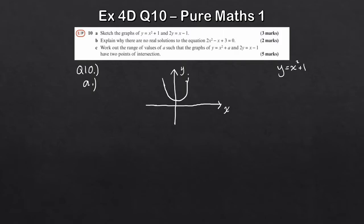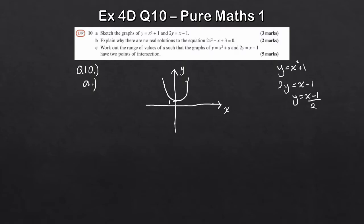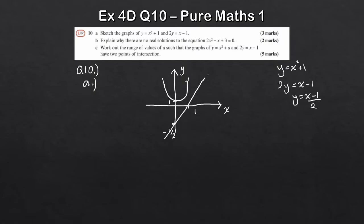Then we draw the linear equation 2y=x−1, or y=(x−1)/2. Where does it cut the y-axis? When x=0, that's minus a half. Where does it cut the x-axis? At x=1. Joining those two points gives the straight line. The key thing that should jump out here is that these two graphs don't actually intersect — the quadratic does not intersect with the linear line.